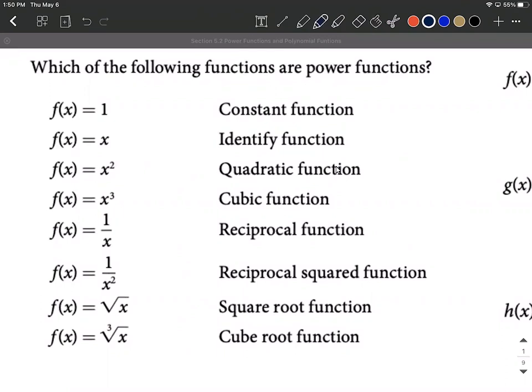The constant function is usually a difficult one, but we'll refer back to exponent rules. If you recall, anything raised to the zero power equals one. So this is a power function: we have one as the coefficient out in front, multiplied by x to the zero power.